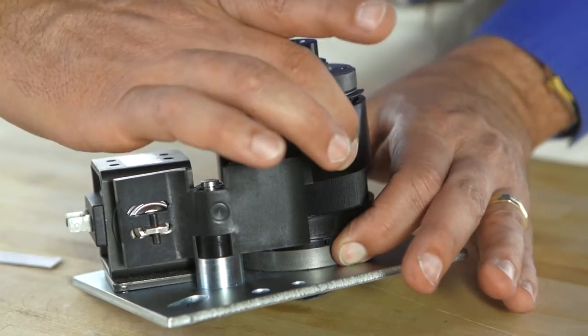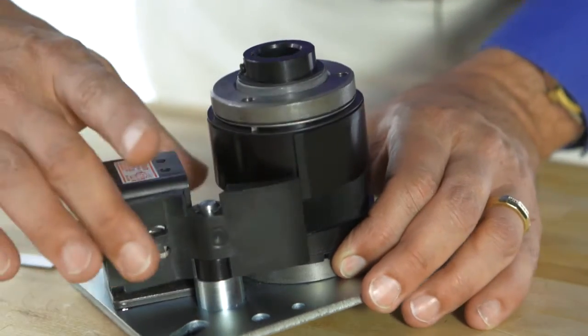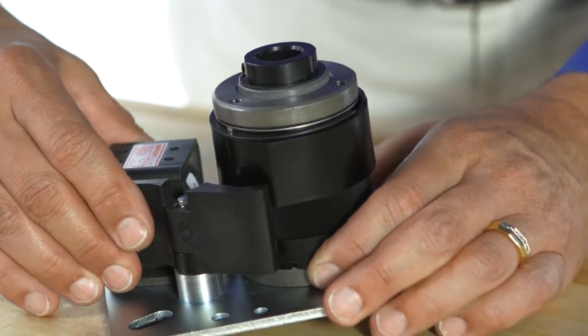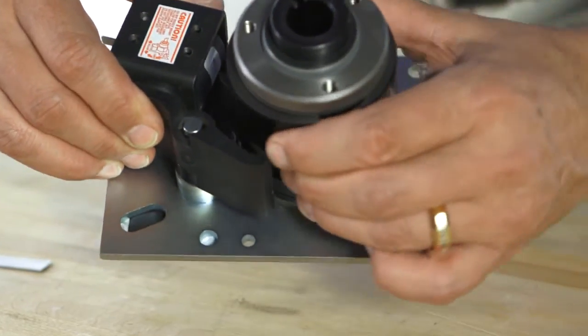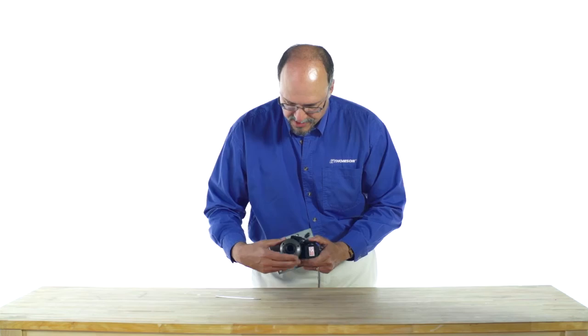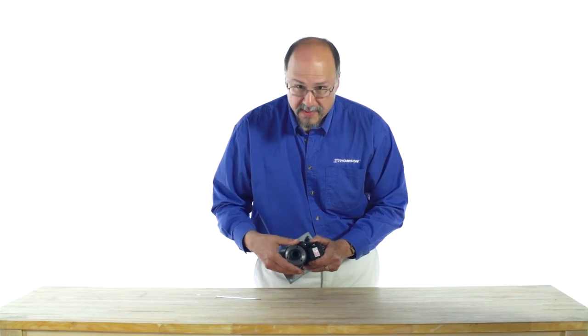While holding down the control tab, pull up the control collar and turn to engage the solenoid. Turn it to the location you desire. In this case, let's make it six o'clock.